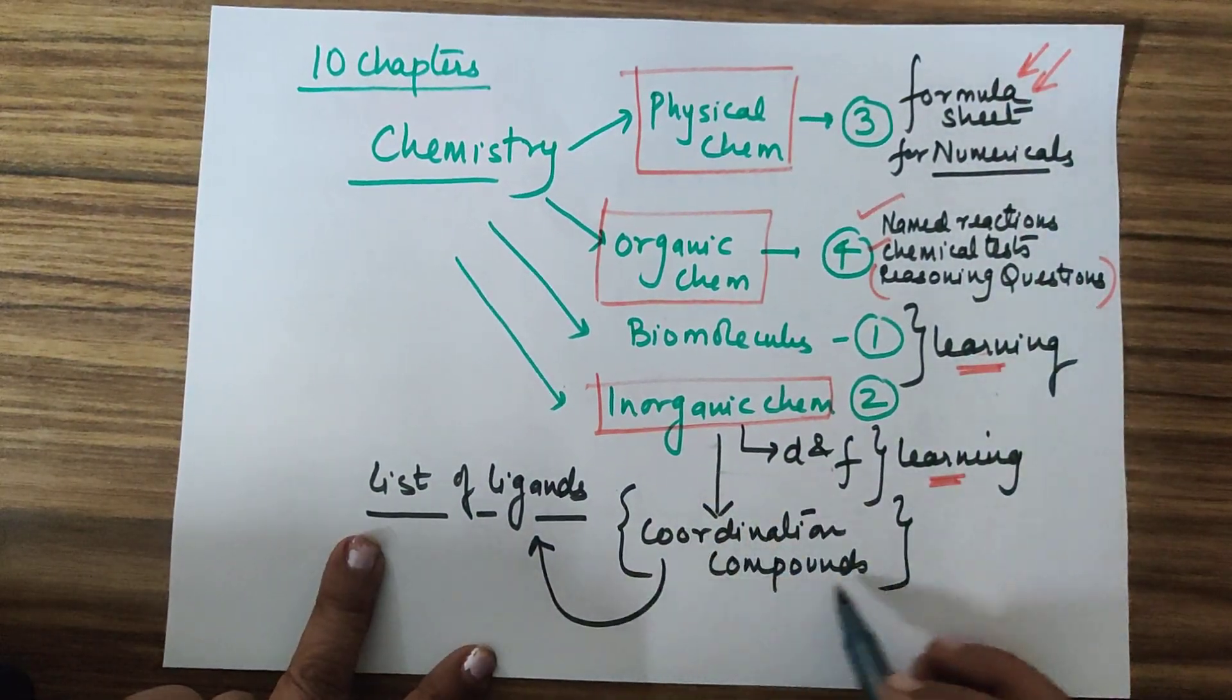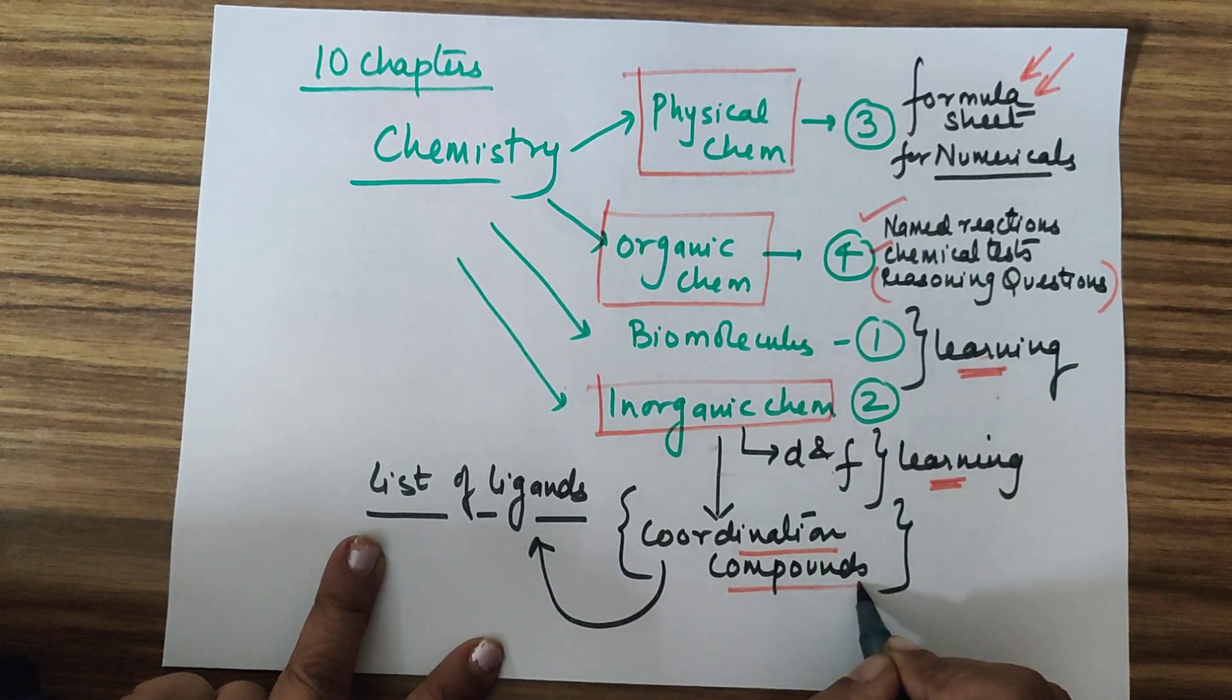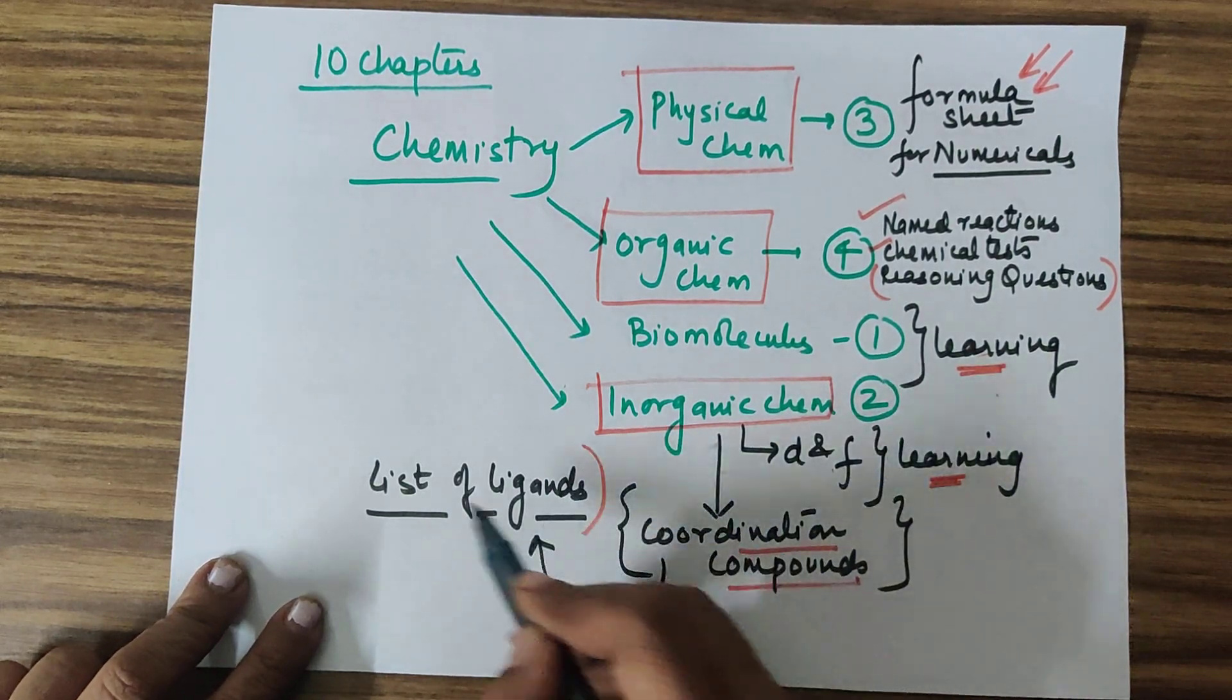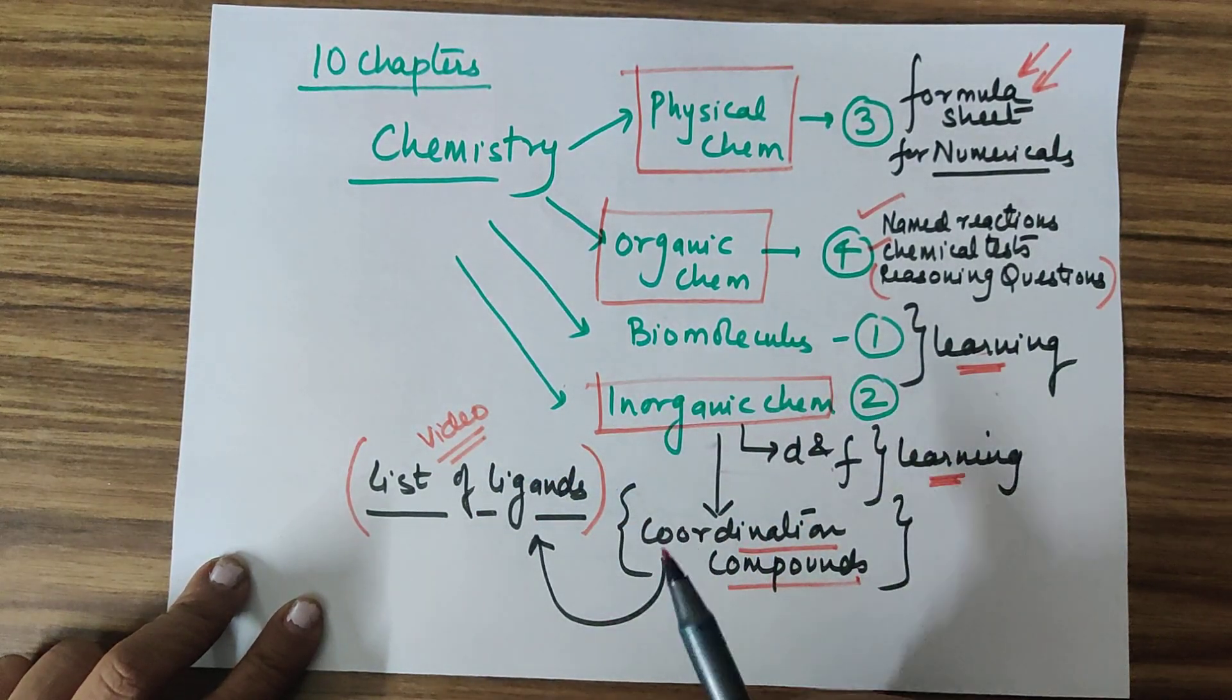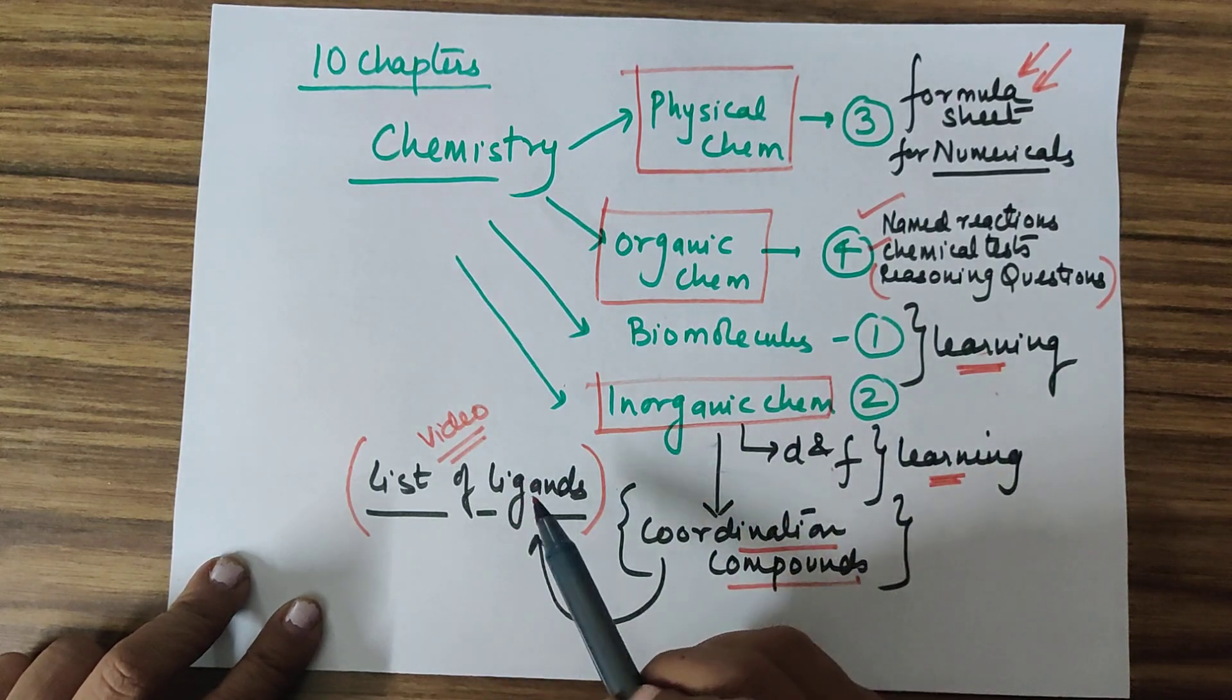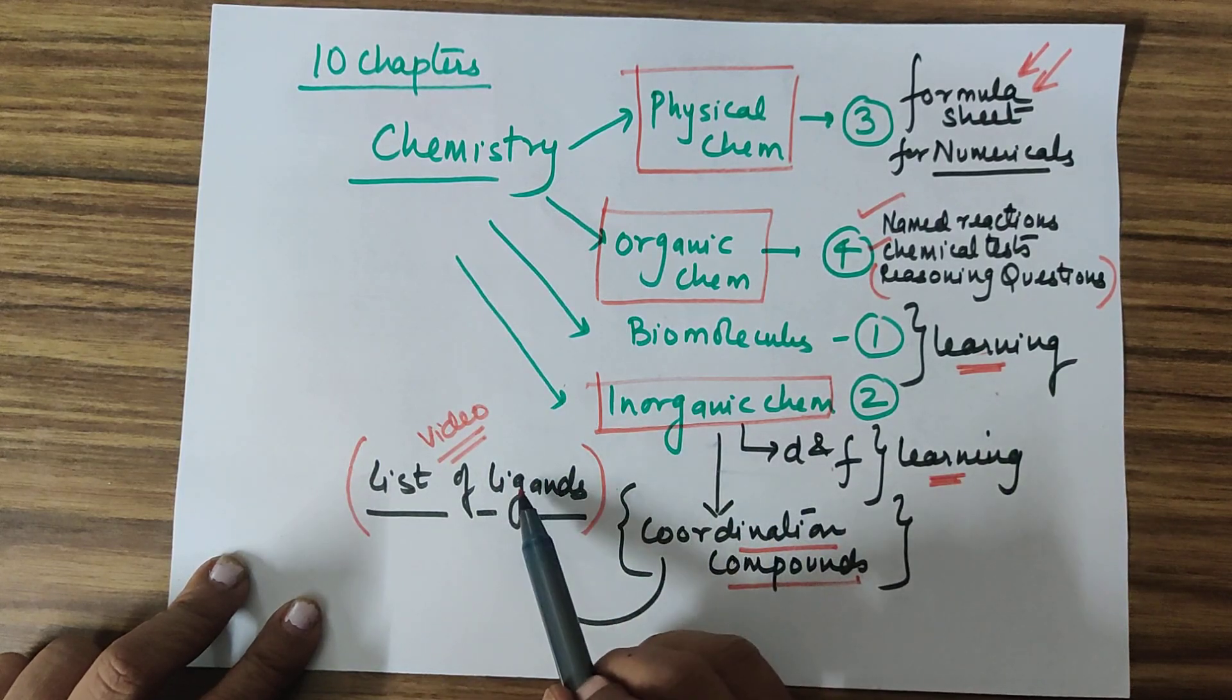Inorganic chemistry, there is one chapter which is Coordination Compounds. This is solely understanding chapter. In inorganic chemistry, there is a number of names of the ligands. So you need to have a list of ligands ready. Of course, there is a video on this channel. If you want it, then you will copy it from there. Because if you don't remember this list, then there will be a problem. So please put a list of ligands on your study table.